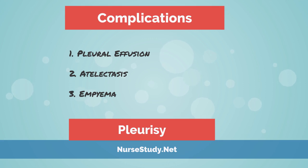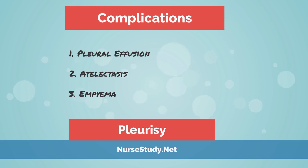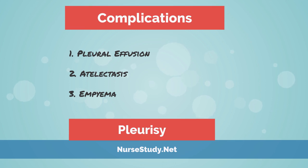2. Atelectasis — pleurisy may eventually lead to the partial or total collapse of the lung due to fluid buildup in the alveoli. 3. Empyema — bacterial infections resulting in pleurisy may eventually develop pockets of pus in the pleural space, known as empyema or purulent pleuritis.